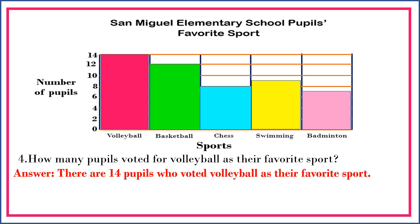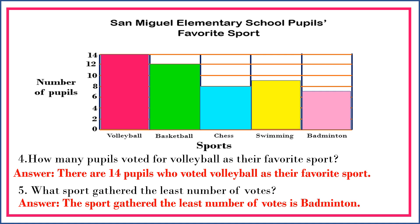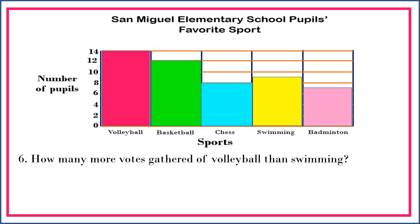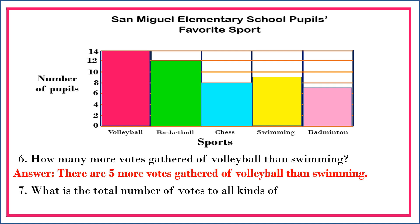Question five: what sport gathered the least number of votes? The sport that gathered the least number of votes is badminton. Next question: how many more votes did volleyball gather than swimming? There are five more votes gathered. Question seven: what is the total number of votes for all kinds of sports in the survey?